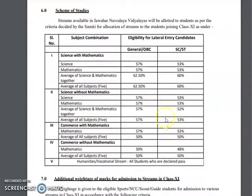Regarding percentage requirements: General and OBC candidates need 50% and above. SC/ST candidates also require 50% and above.